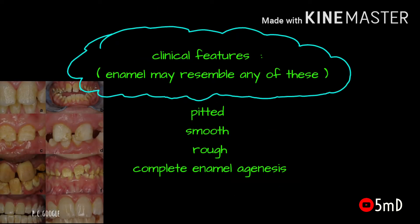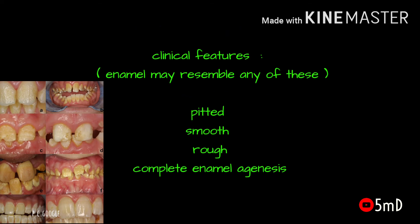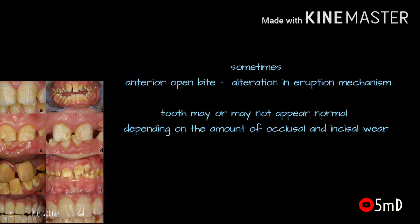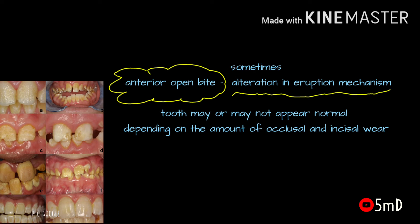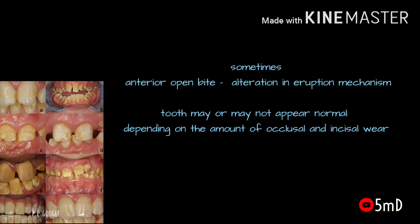The clinical features could be either pitted, smooth, rough, or complete enamel agenesis. At the same time, it could also result in anterior open bite because of alterations in the eruption mechanism. The overall appearance and shape of the tooth may not be normal and depend on the amount of enamel present on the tooth, as well as the amount of occlusal and incisal wear.